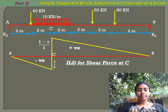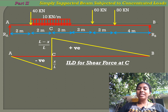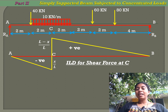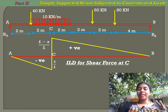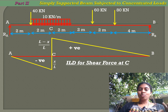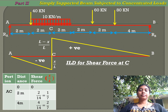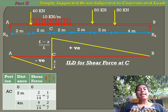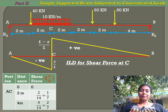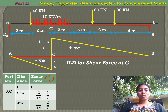For the given problem, we know the influence line diagram for shear force at a section has ordinates of minus x/L and (L minus x)/L. Since section C is at 4 meters from A, x equals 4 meters. The positive ordinate is (L minus x)/L and the negative ordinate is x/L. For span A-C, the ordinates are x/L. We find ordinates every 2 meters from 0 to 4 meters.